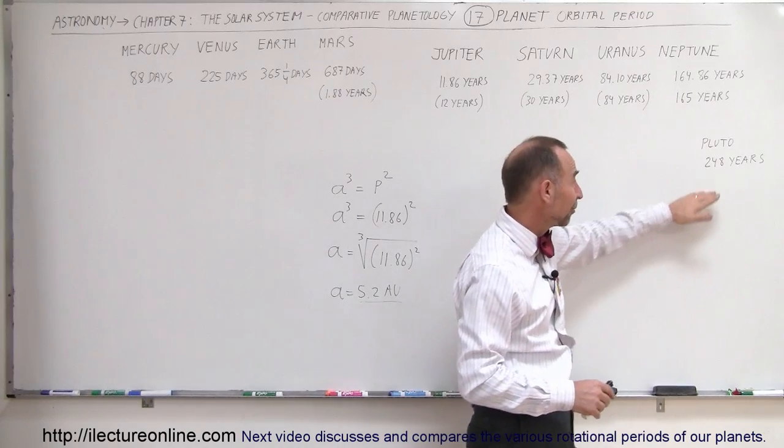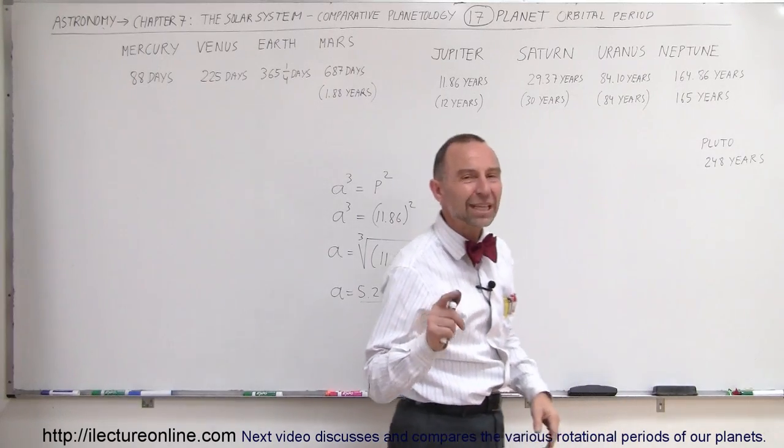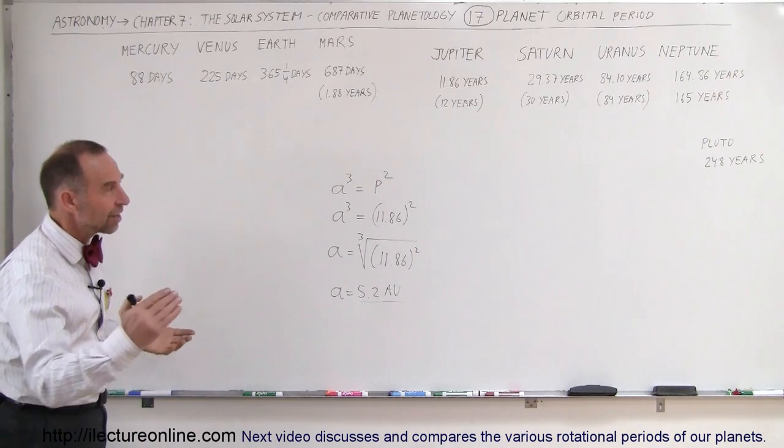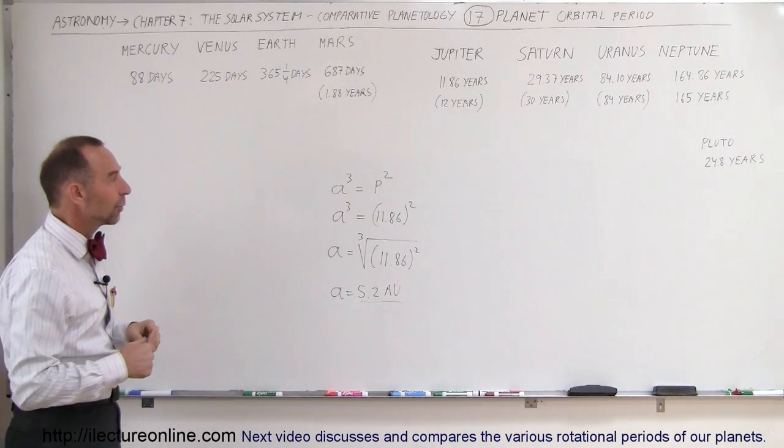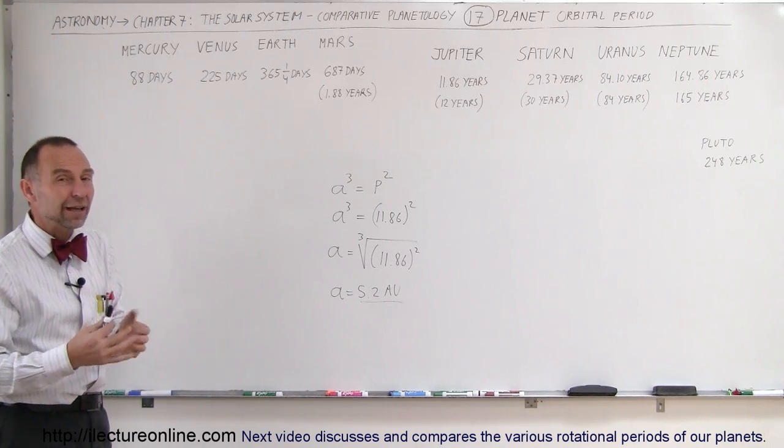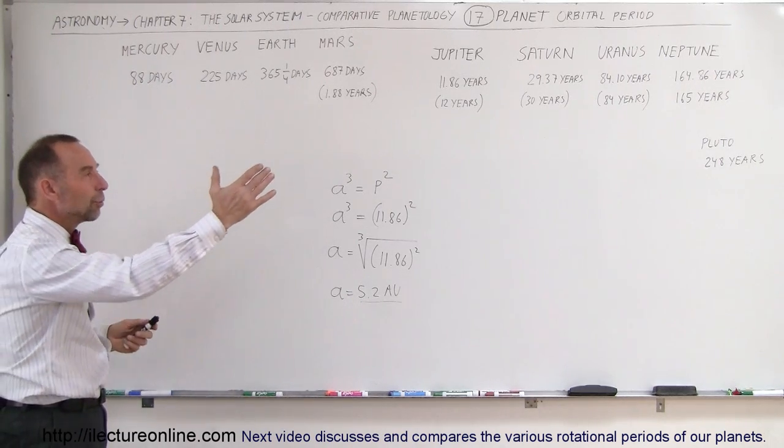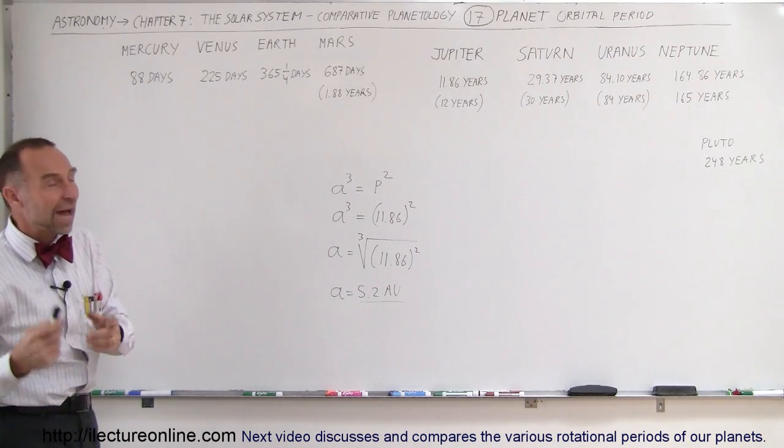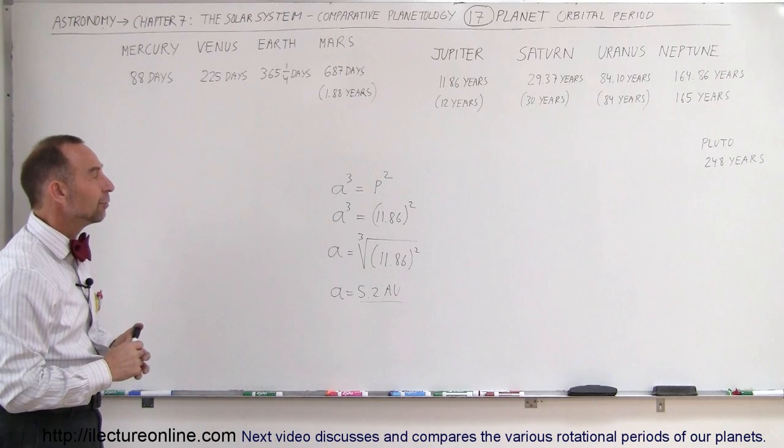And just for comparison, for Pluto, it takes 248 years to make one trip around the sun. At those enormous distances, it takes a very long time for a planet to travel around the sun. But that gives you a feel for how far and remote they are, and how slowly they move around the sun in orbit. But just think, in a single lifetime, Neptune will not travel around the sun even once.